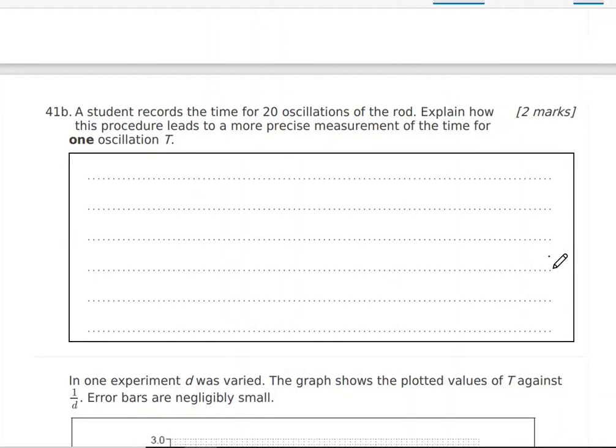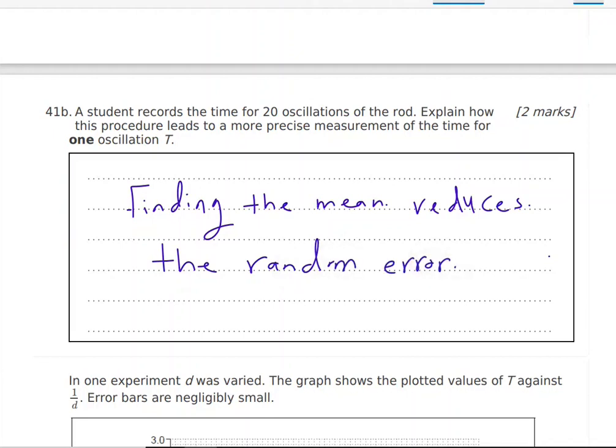That will reduce the random error. So finding the average, finding the average or the mean will reduce the random error or the error due to human errors.